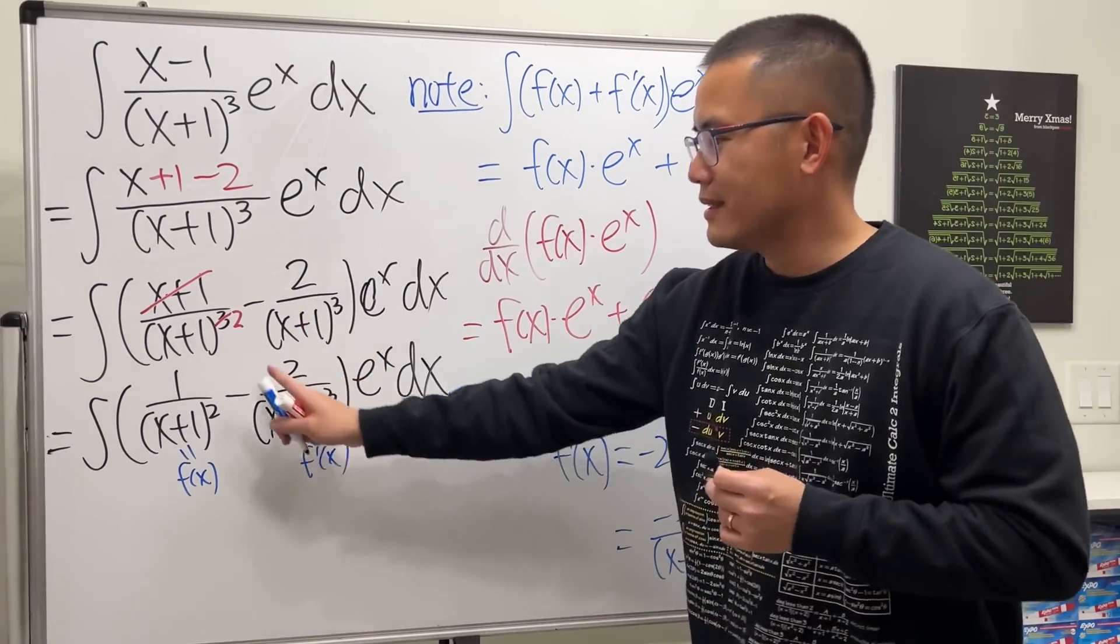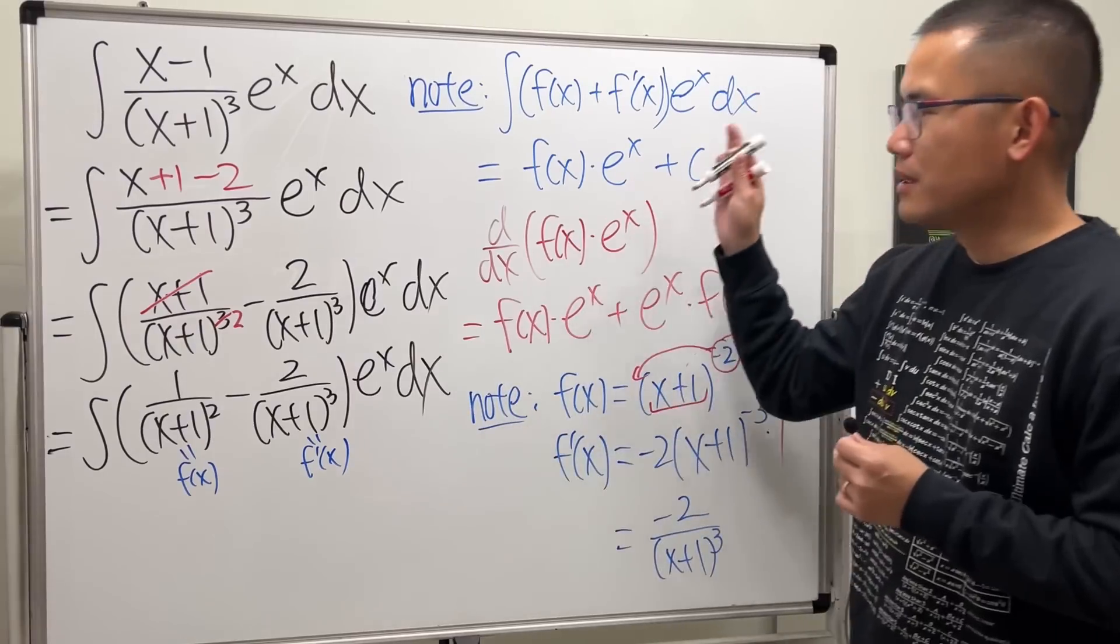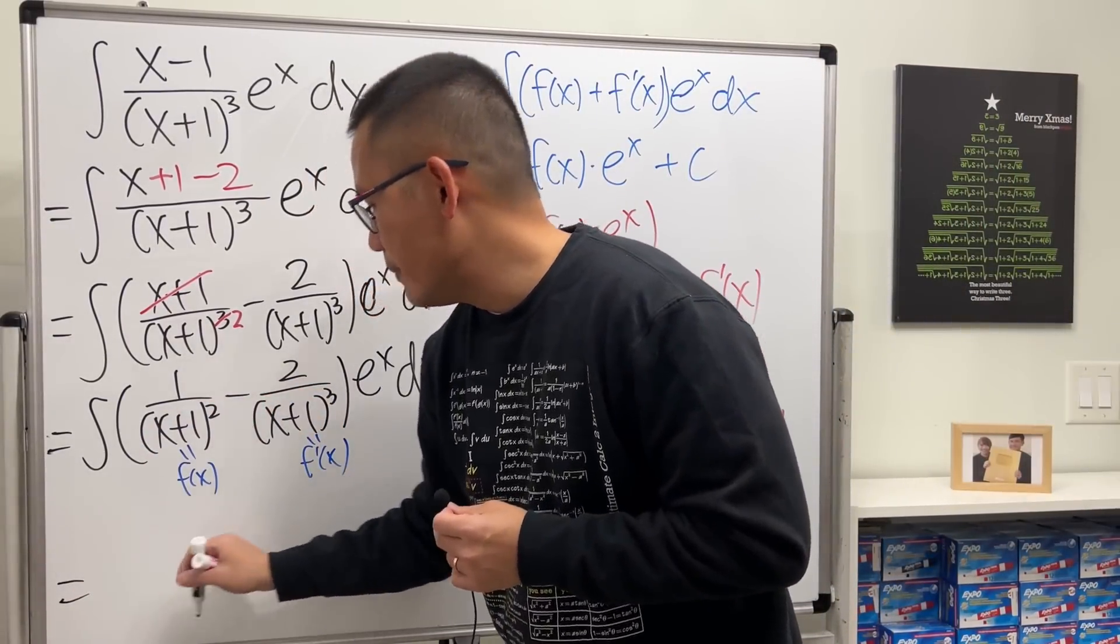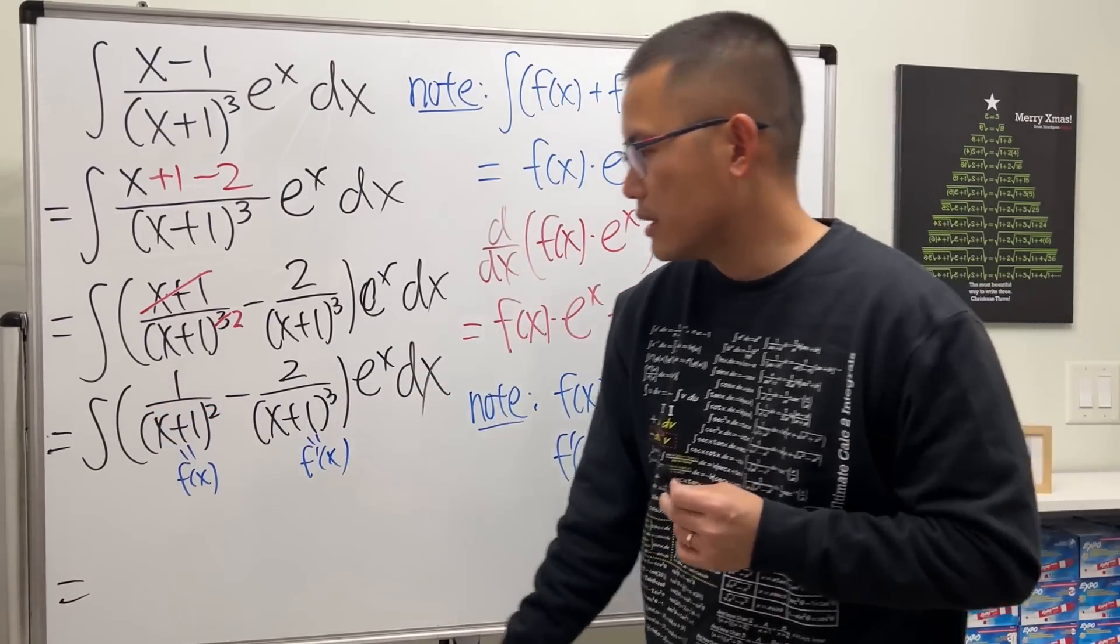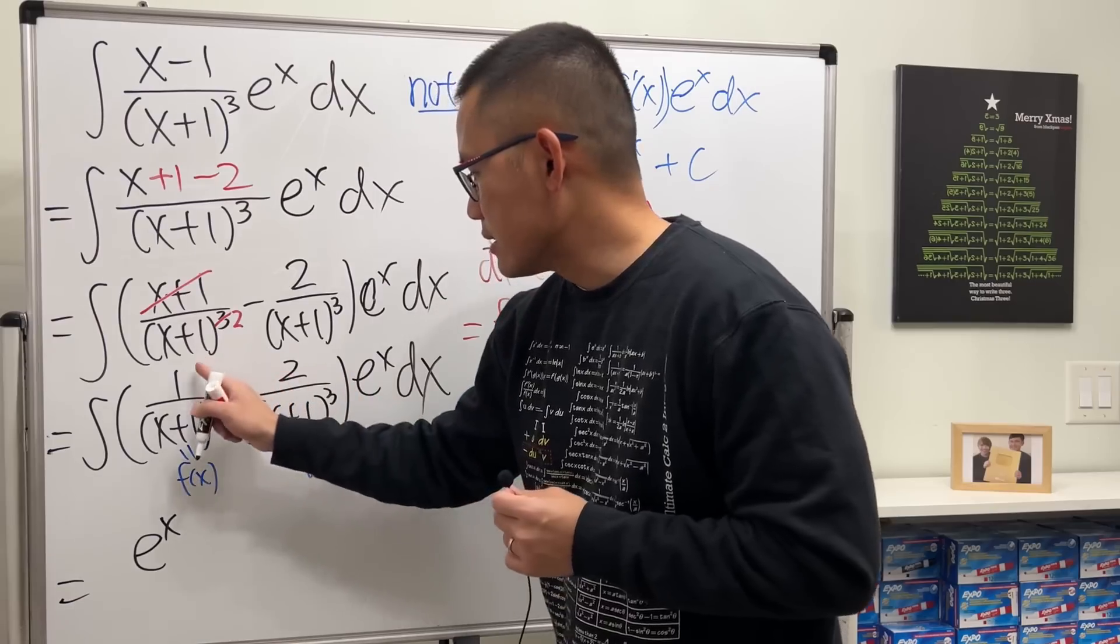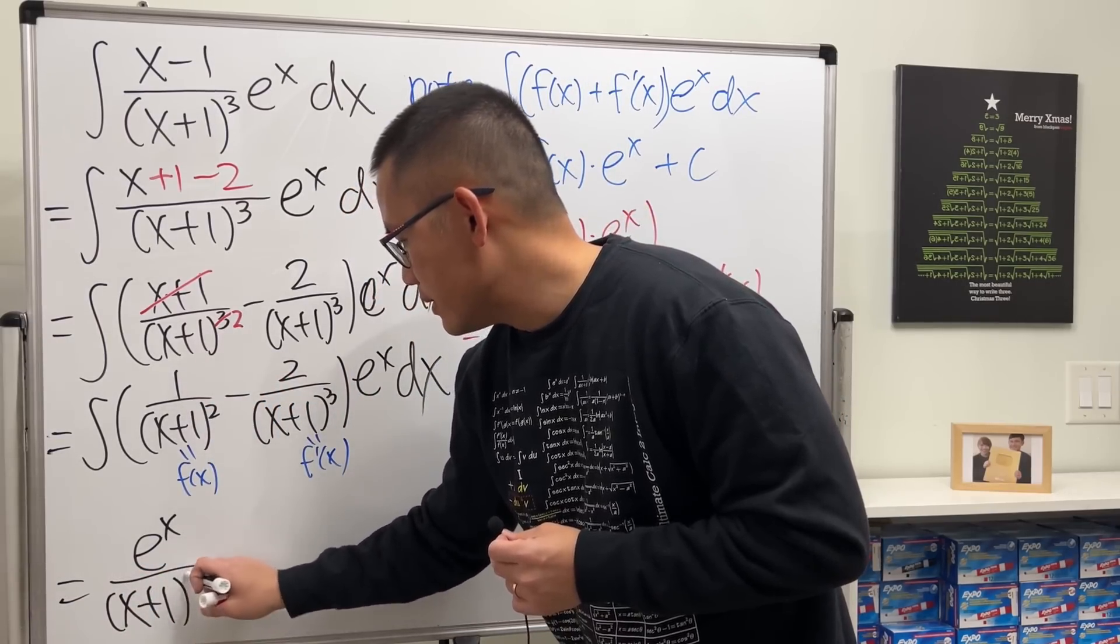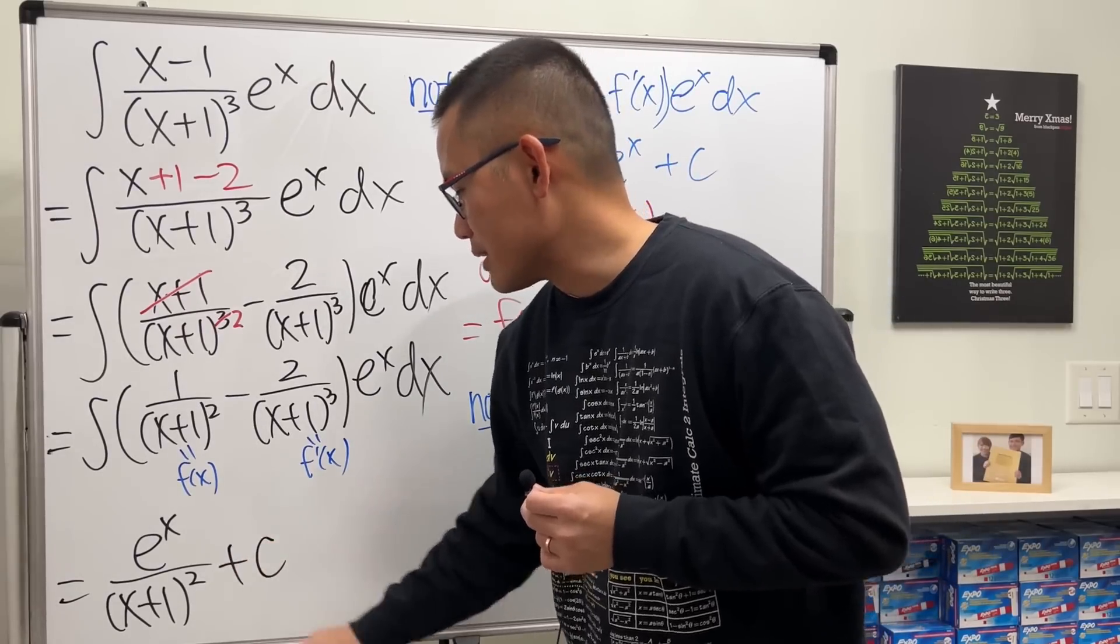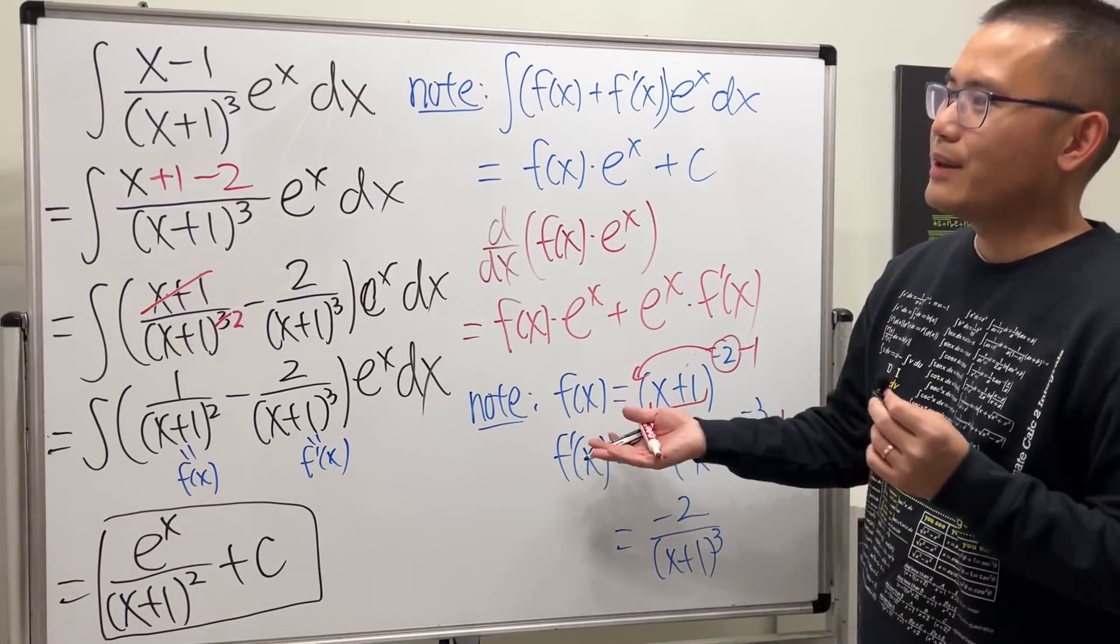So by what we talked about earlier, this right here is just going to be the original function right here times e^x. So I'm just going to put down e^x on the top over parentheses (x+1)², and then that's it. Of course, put down plus C. (x+1)² and that will do it.